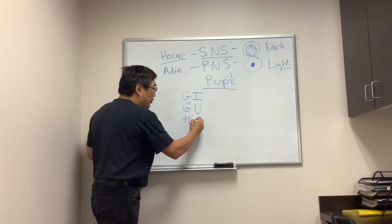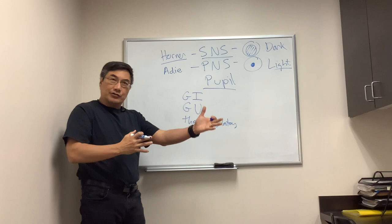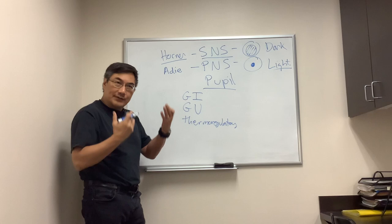You've got thermoregulatory problems, and that's the sweating. So they might have hyperhidrosis, too much sweating, or anhidrosis, too little sweating. And it can be segmental, just one piece of you, or it can be diffuse.